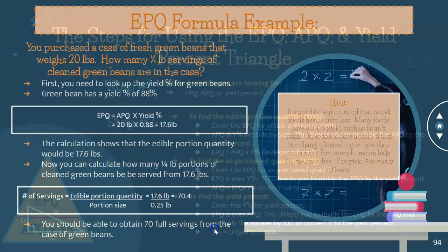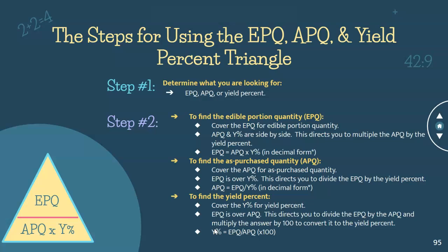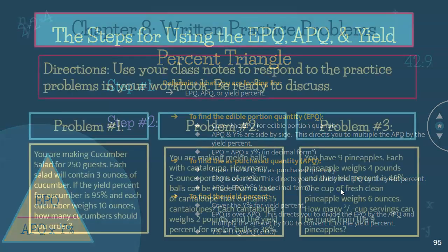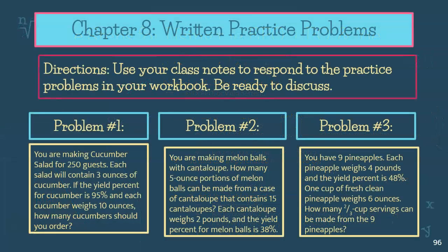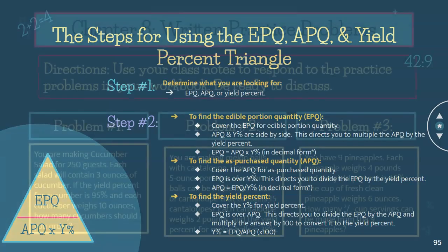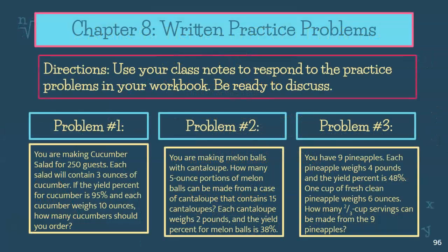The steps for using the EPQ, APQ, and yield percent triangle are the same — they're relisted for easy reference when calculating. Even when working through problems and scenarios, it's simple to just follow the steps, and the more you do it, the easier it becomes. That leads us to the Chapter 8 practice problems. Go through them, follow along using these steps, and use the next Chapter 8 screencast for the practice problems to check your work. Ask questions if you need clarification.